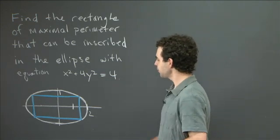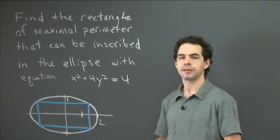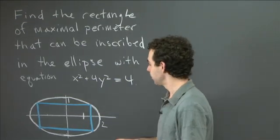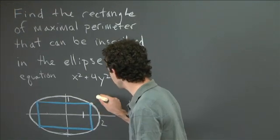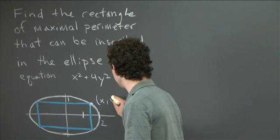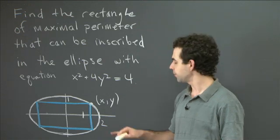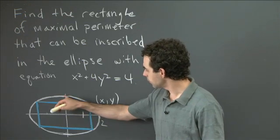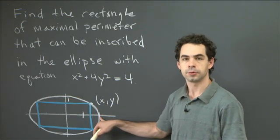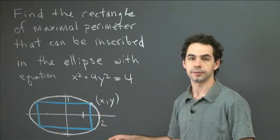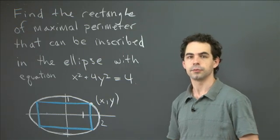We need to figure out a way to describe these rectangles and write down what the perimeter is. A natural way to do that is to call the upper right-hand corner of the rectangle the point x, y. So x, y is that upper right-hand corner, ranging over the quarter arc of the ellipse from the topmost point down to the rightmost point. Given that point x, y, we need to figure out what is the perimeter we're trying to optimize.